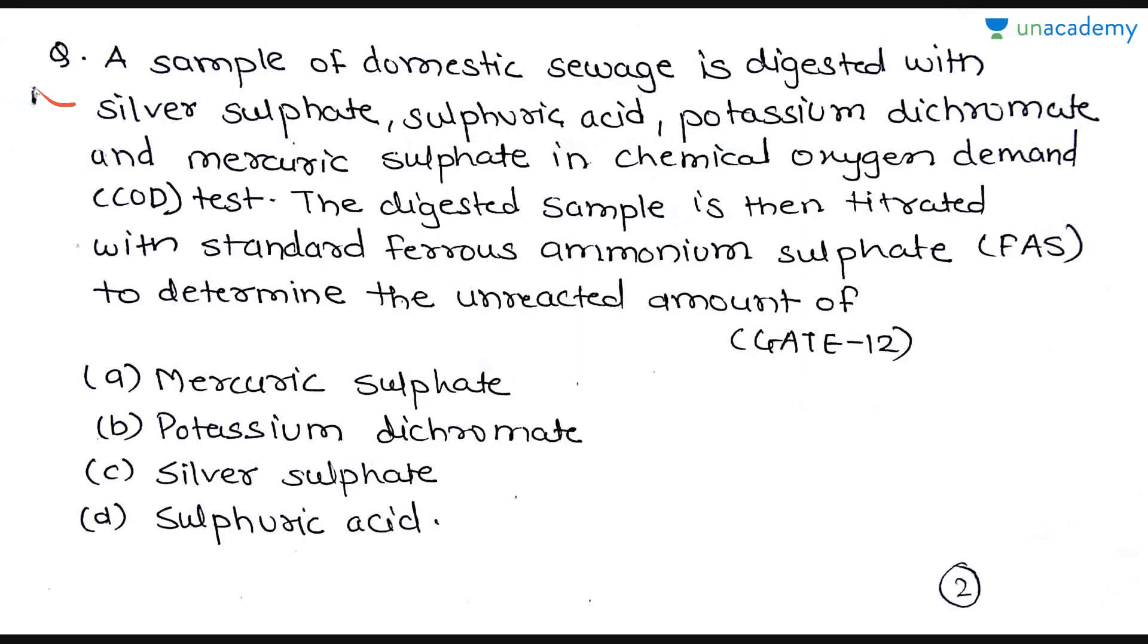The next question is, a sample of domestic sewage is digested with silver sulphate, sulphuric acid, potassium dichromate and mercuric sulphate in chemical oxygen demand, that is COD test. The digested sample is then titrated with standard ferrous ammonium sulphate, that is FAS, to determine the unreacted amount of: option A is mercuric sulphate, option B is potassium dichromate, option C is silver sulphate and option D is sulphuric acid. This question was asked in GATE 2012. So friends, if you have knowledge of COD, it means its definition like COD is chemical oxygen demand and it is chemical oxidation with potassium permanganate or potassium dichromate in an acid solution. If you know this much, then you can easily answer this question.